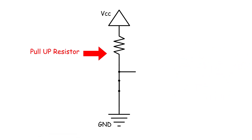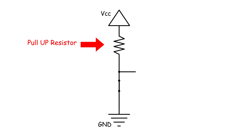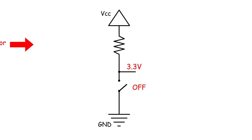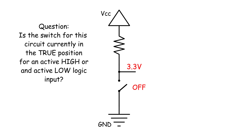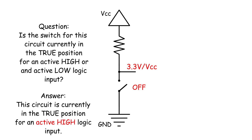This circuit makes use of a pull-up resistor to control the output line. It's called a pull-up resistor because when the switch is open, i.e. in the off position, it directly connects a high voltage to the output. Since you've been learning about active high and active low circuits, is this circuit currently true for active low, or is it true for active high? Since the switch is open, the output is being connected to VCC, and therefore we have 3.3 volts at the output, meaning that this is in the true position for an active high circuit.